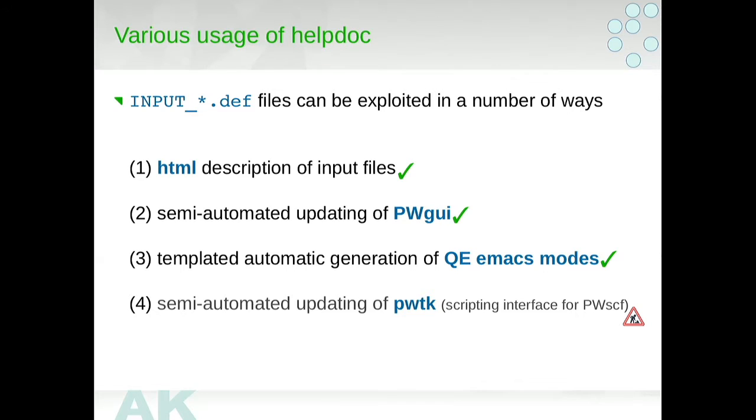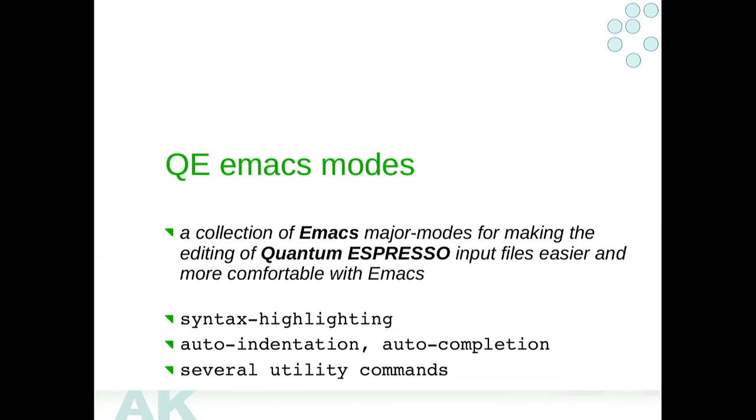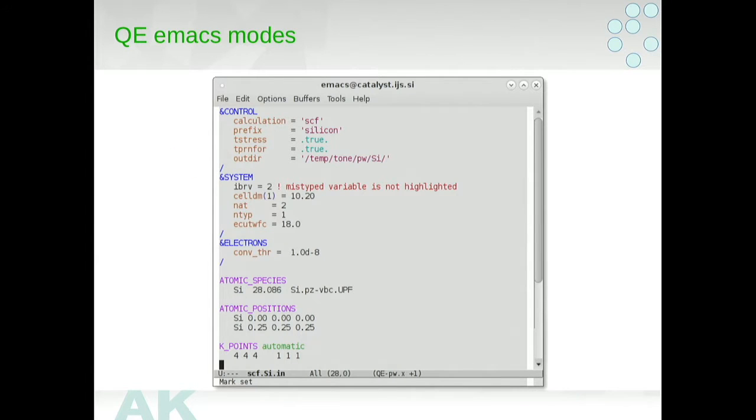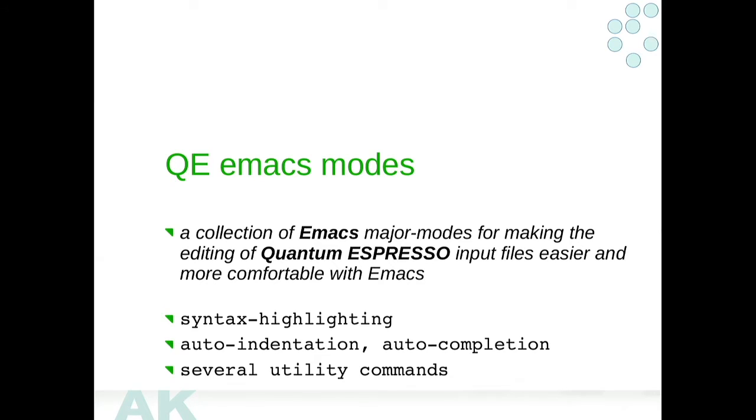PWTK is a scripting interface for PWS. But this is in progress. Now I will describe these Emacs modes for Quantum Espresso. Basically, this Quantum Espresso Emacs modes is a collection of Emacs major modes for making the editing of Quantum Espresso input files easier and more comfortable with Emacs. It's just for Emacs, but if somebody is using VI, I would just like to tell that Emacs has also an emulation for VI. So if you are using VI, you can use this VI emulation for Emacs and then you can also use these modes for VI.